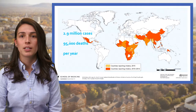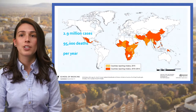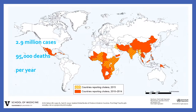Cholera is an acute diarrheal illness caused by an infection of the intestine with the toxigenic bacterium Vibrio cholerae, serogroup O1 or O139. An estimated 2.9 million cases and 25,000 deaths occur every year around the world. The infection is often mild or without symptoms, but can sometimes be severe. Approximately 1 in 10 infected persons will have severe disease, characterized by profuse watery diarrhea, vomiting, and leg cramps. Rapid loss of body fluids leads to dehydration and shock, which without treatment can occur within hours.